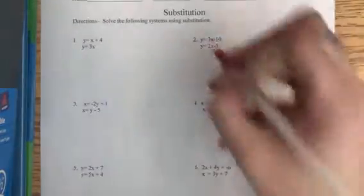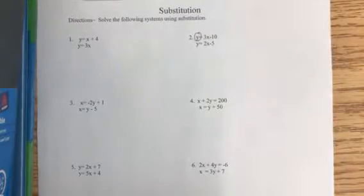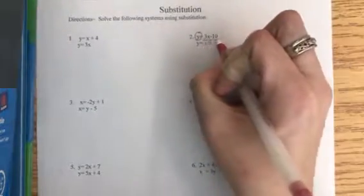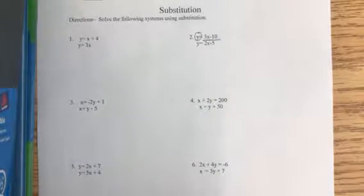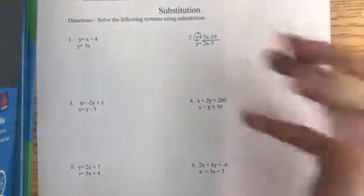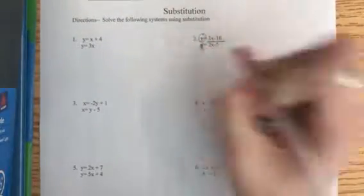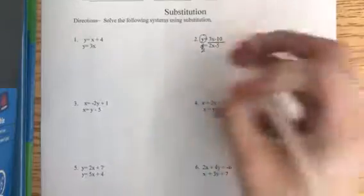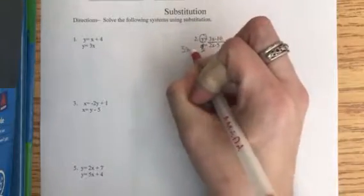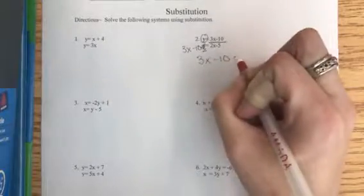Okay, we then said that we would underline what it equals. We're going to go to the equation that we haven't touched yet and we're going to cross out the same letter that we circled. So I circled the y, so I'm going to cross out the y and in its place we're going to put in what we underlined. So 3x minus 10, so I now have 3x minus 10.